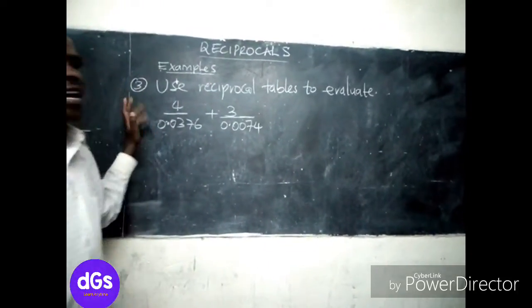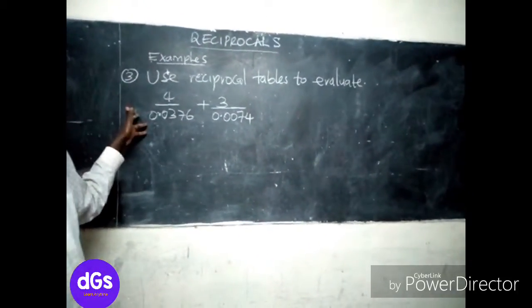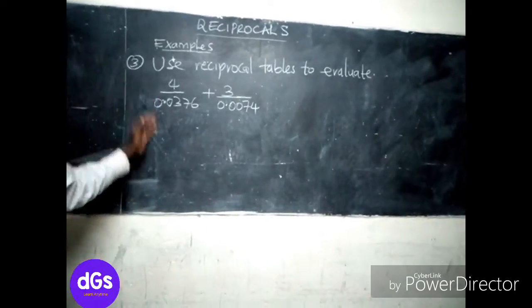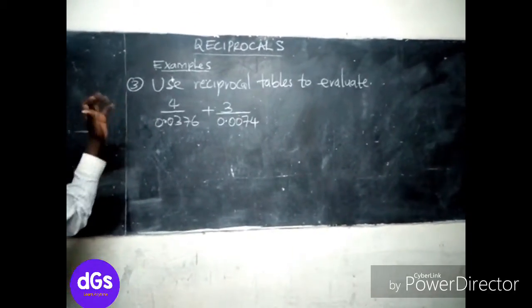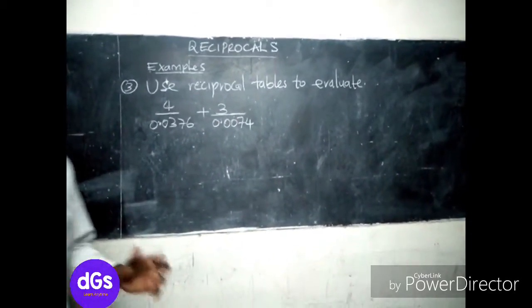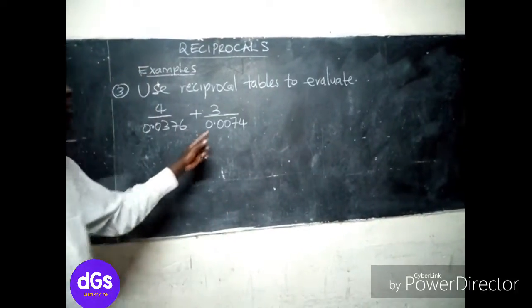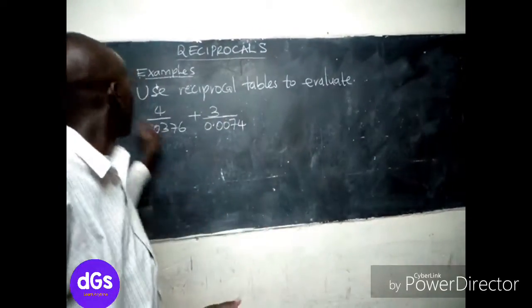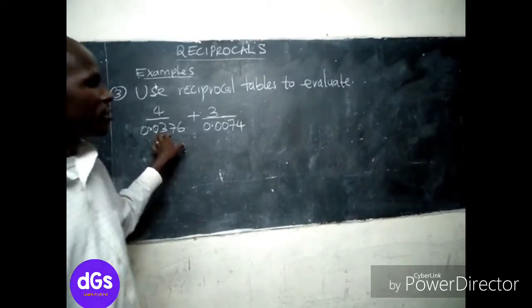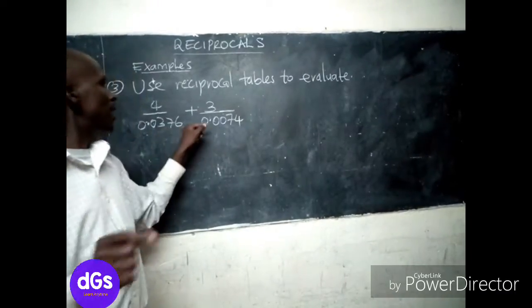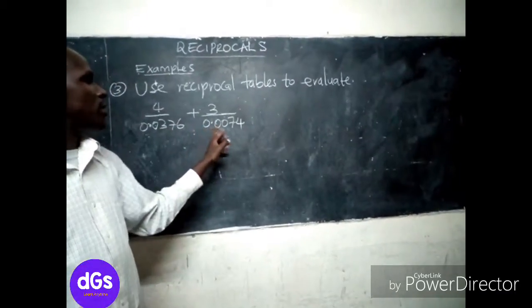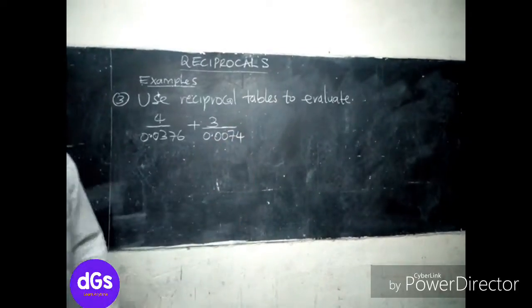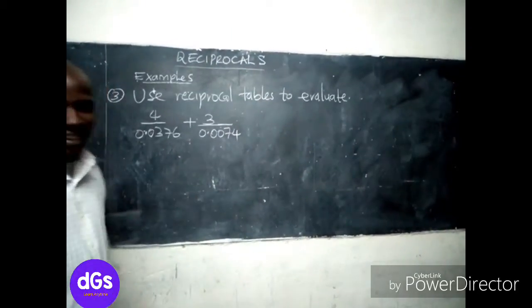Reciprocals, and this is our third example. We want to see how you solve reciprocal questions of this nature. The question says: use reciprocal tables to evaluate 4 over 0.0376 plus 3 over 0.0074. Now let's go to the working and see how we do it.